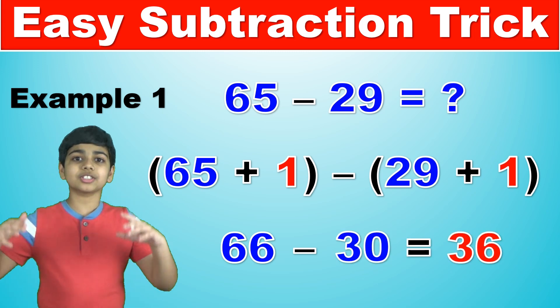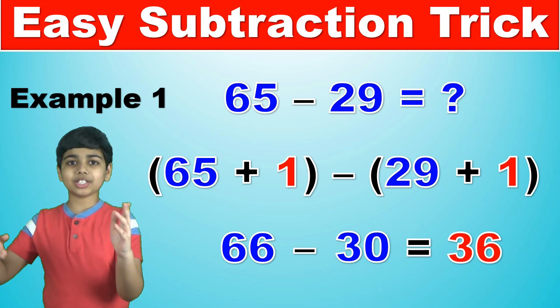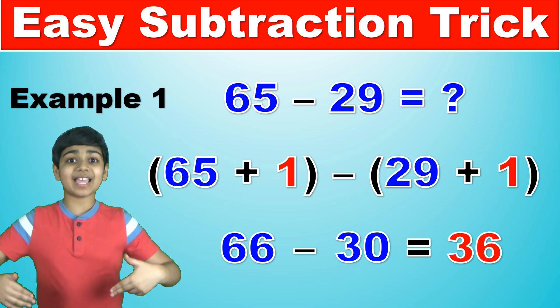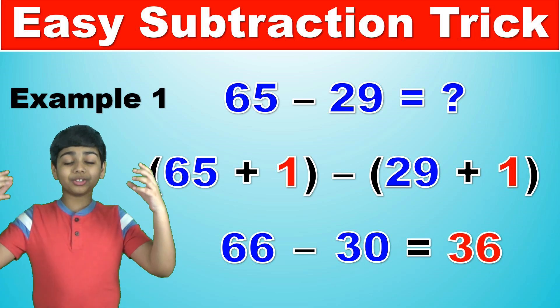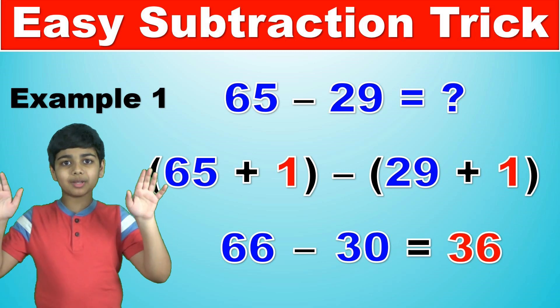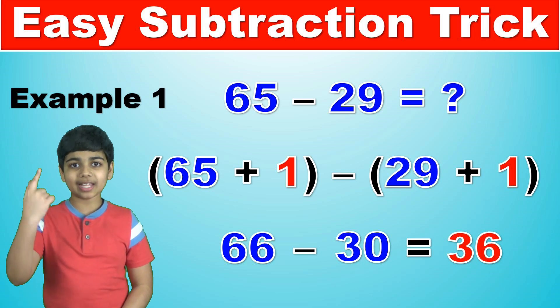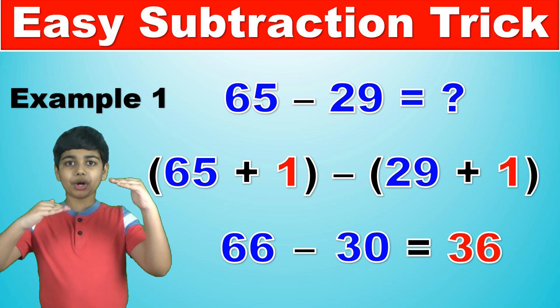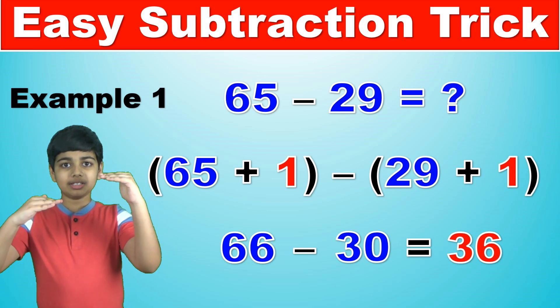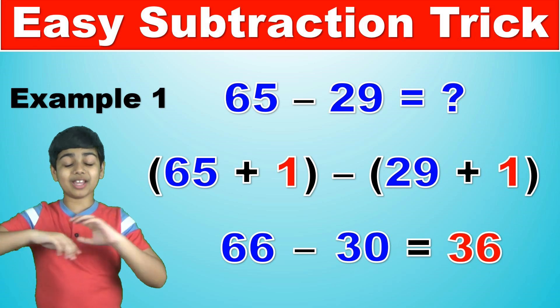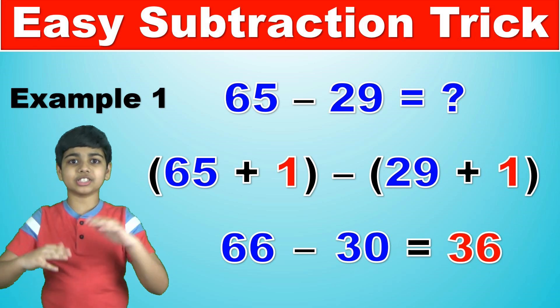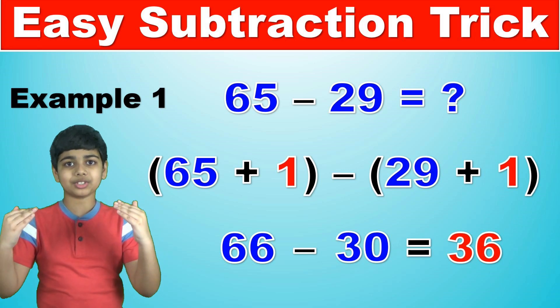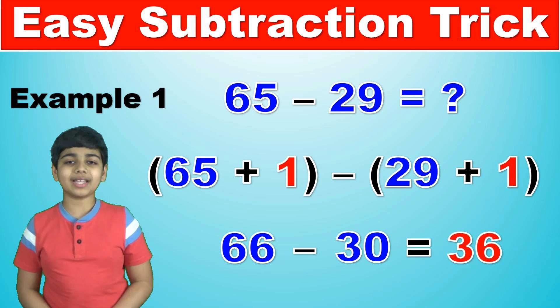And so this is the trick. Because 65 minus 29 and 66 minus 30 are the exact same. The answer is equal in both of them. Because all we're doing is just adding 1 to both of the numbers. So think of it as like a sort of bar graph. If you add 1, the difference between these two is still the same. No difference has changed, because they have both increased by the same amount. So that is the principle behind this trick.